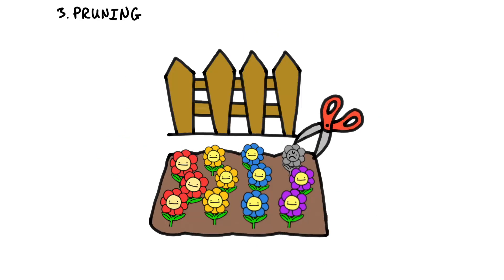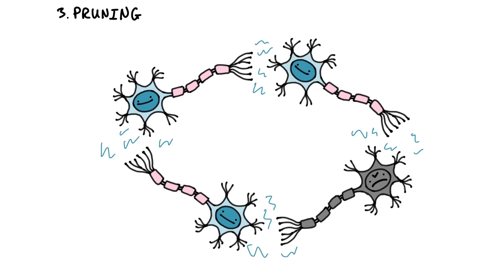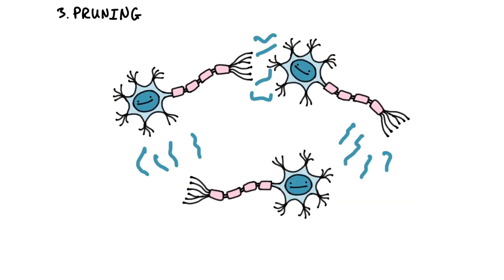Step 3 is pruning the garden. Just like a gardener trims excess leaves, our brain eliminates unnecessary or weak connections through synaptic pruning. This focuses our resources on vital connections, streamlining and improving our learning.